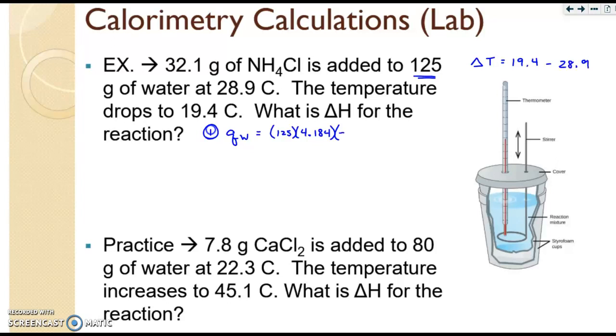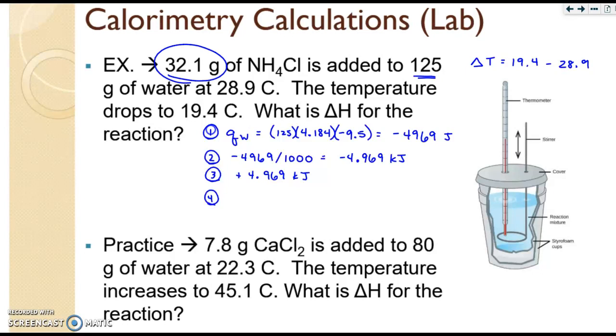We're going to get a negative answer here, and that's okay. So negative 9.5. When you solve that, you should get something like negative 4,969 joules. Step two is to convert to kilojoules. So we take our answer and divide by 1,000, which is really just moving the decimal three spaces. Step three, we change the sign. So it was negative, it now changes to positive. Step four, we take the other gram amount in the problem, the grams of the salt, and we convert that into moles by dividing by molar mass. So we're going to take our 32.1 grams. The molar mass is 53. You would get that from the periodic table. And you should get right about 0.606 moles.